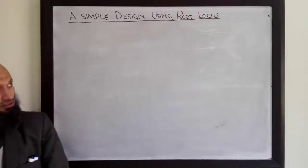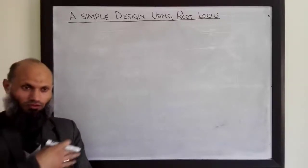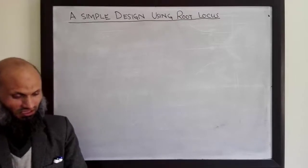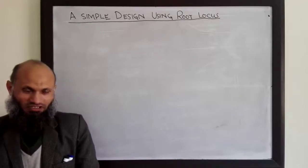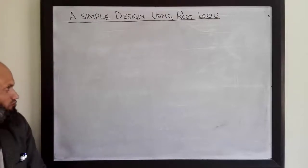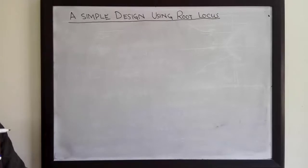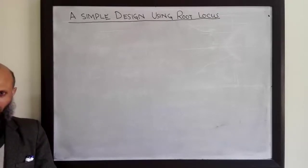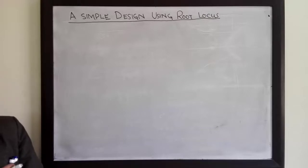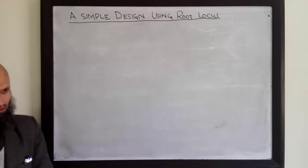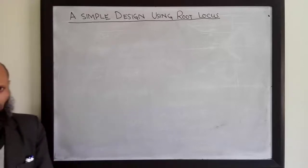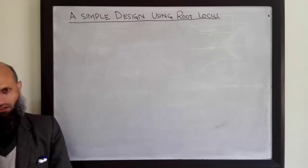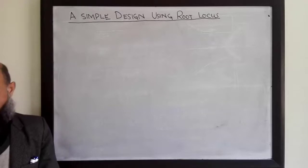We know that root locus is the sketch of closed-loop poles as we change the gain in the system. We also remember that transient specifications as well as stability is mainly determined by the location of closed-loop poles. Therefore, to achieve transient response specifications, we can manipulate the root locus to achieve the required specifications. In today's lecture, we shall talk about a simple example to demonstrate that particular concept.